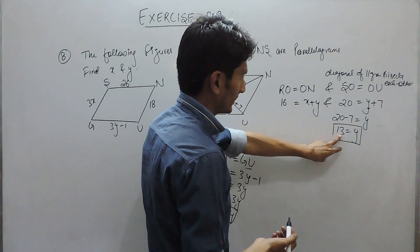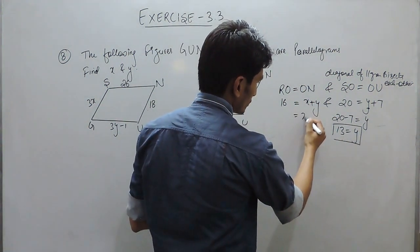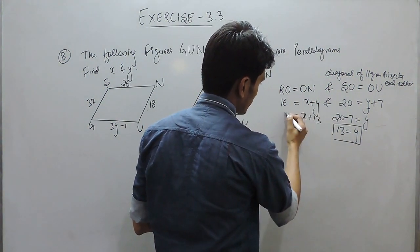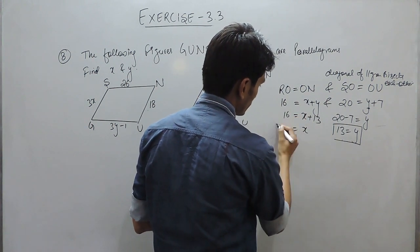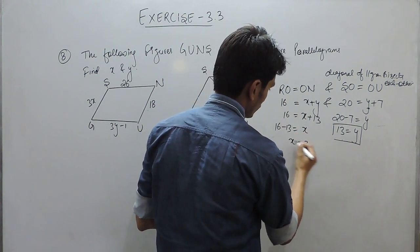If the value of y is 13, you can simply put here. So, the value of x plus 13 is 16. So, the value of x must be 16 minus 13. So, x is 3.